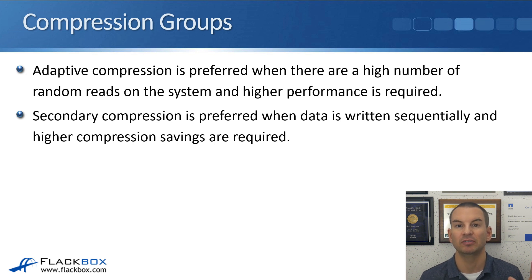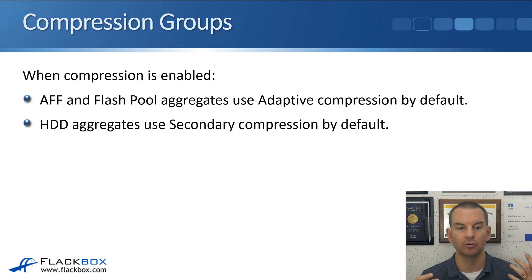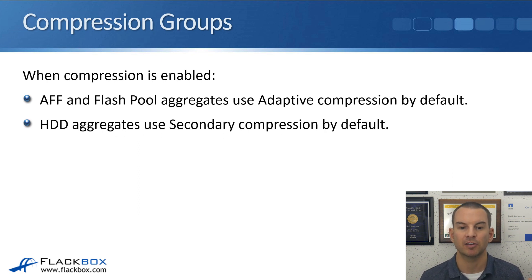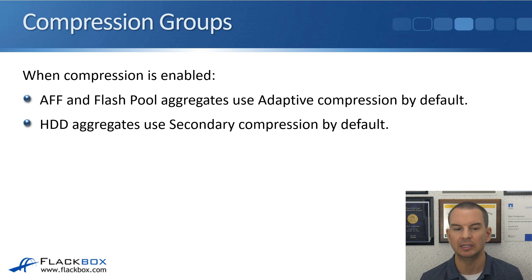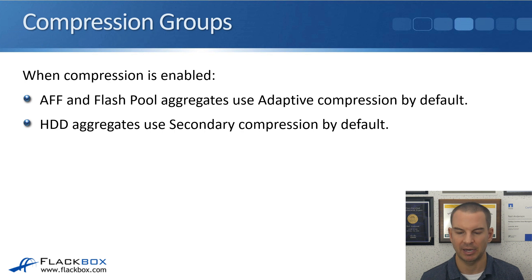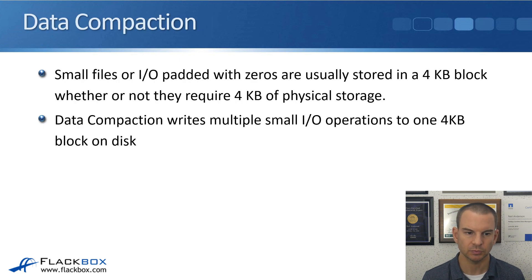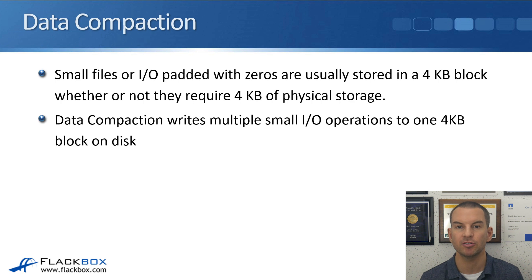Adaptive is for high performance. When compression is enabled, AFF and flash pool aggregates — your high-performance aggregates — use adaptive compression by default. HDD aggregates use secondary compression by default. The last technology is compaction.